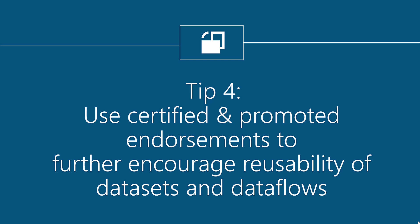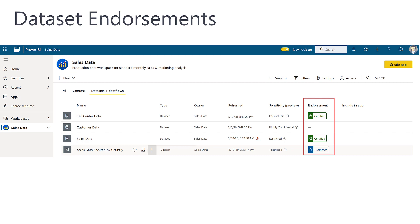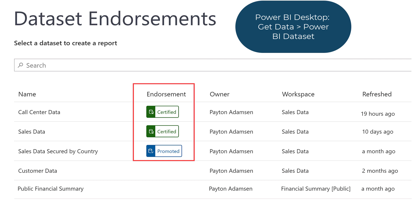Tip 4: use certified and promoted endorsements on your datasets and dataflows, which will help reusability even more. Setting certain datasets to be certified or promoted can help your self-service report creators a great deal. When a dataset has been certified, this is a signal that it is trustworthy — it's been validated, and business rules and naming match organizational expectations. Because it does involve some rigor to ensure trustworthiness, very few people should be allowed to certify data. In Power BI Desktop, when we do a Get Data to connect to a dataset published to the Power BI Service, certified datasets show up first, followed by promoted datasets. This is what makes them more easily discoverable by report creators.